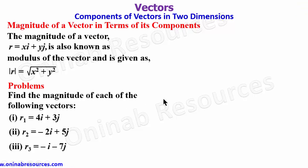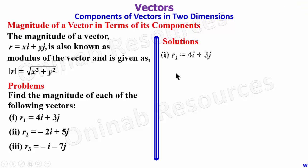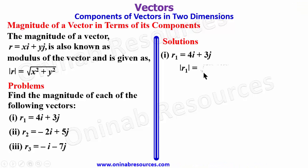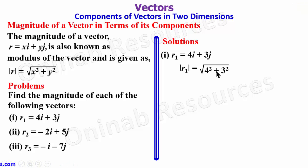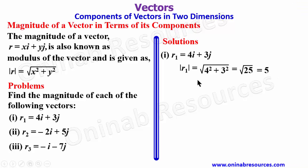Find the magnitude of each of the following vectors: r1, r2, and r3. In our solution, we start with r1. So r1 = 4i + 3j. The magnitude of r1 is the square root of 4² + 3², which is √(16 + 9) = √25 = 5. That's all for the magnitude of r1.